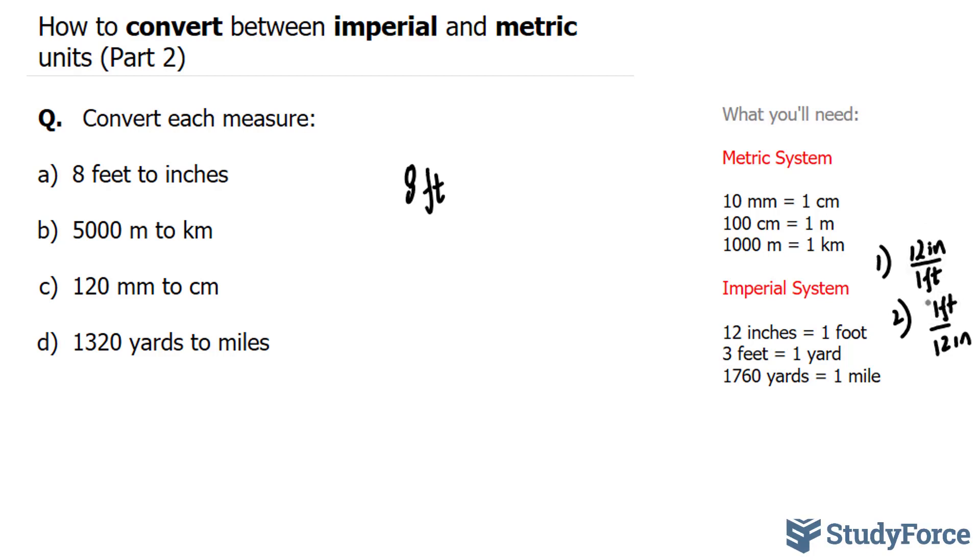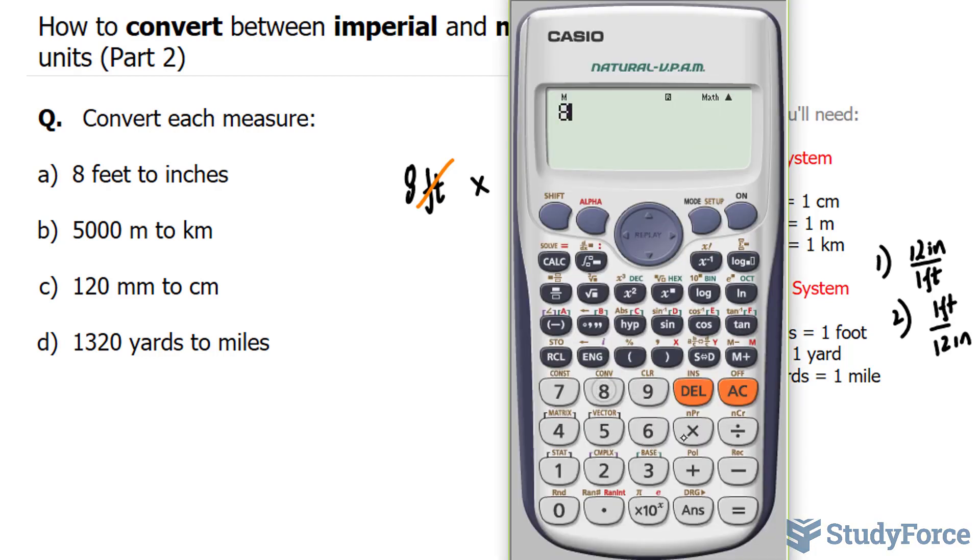And the one that we choose to multiply to 8 feet is the one that would have the feet at the bottom. Because by having the feet at the bottom, look what happens. The feet will cancel out. You see? Multiplying this with this cancels out the feet. And so we're left with 8 times 12 inches. And that is equal to, you can use your calculator, 8 times 12 is equal to 96.